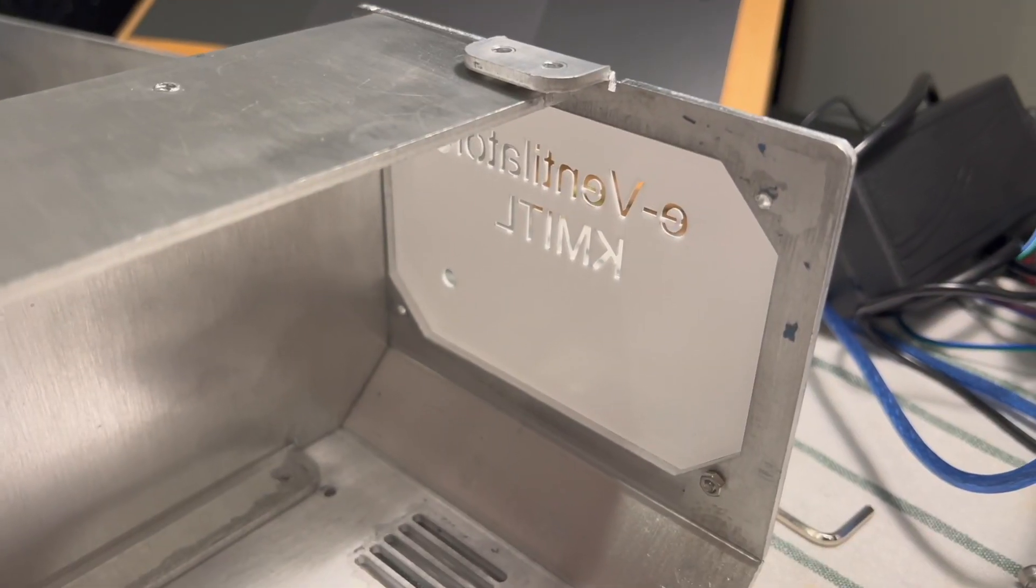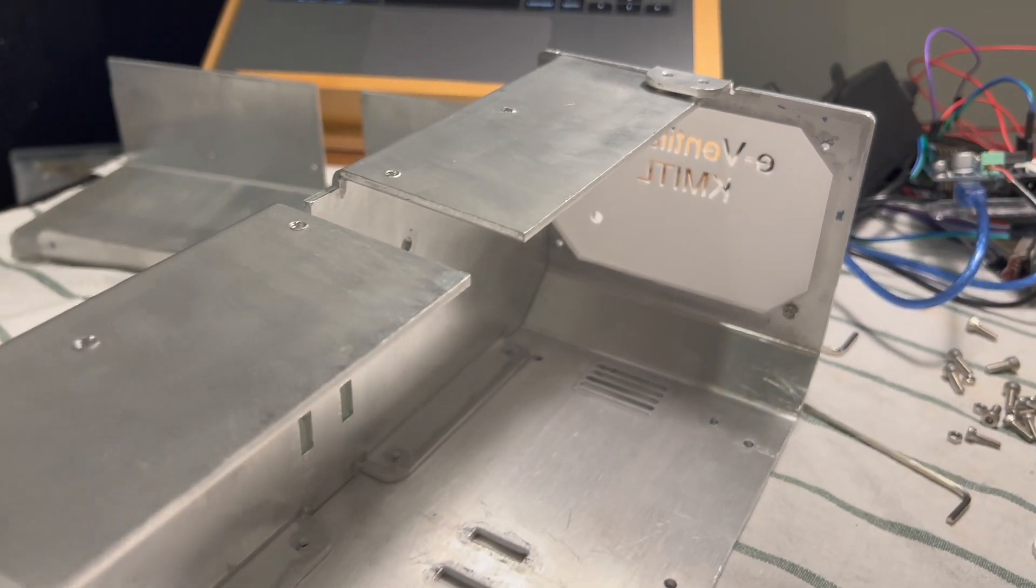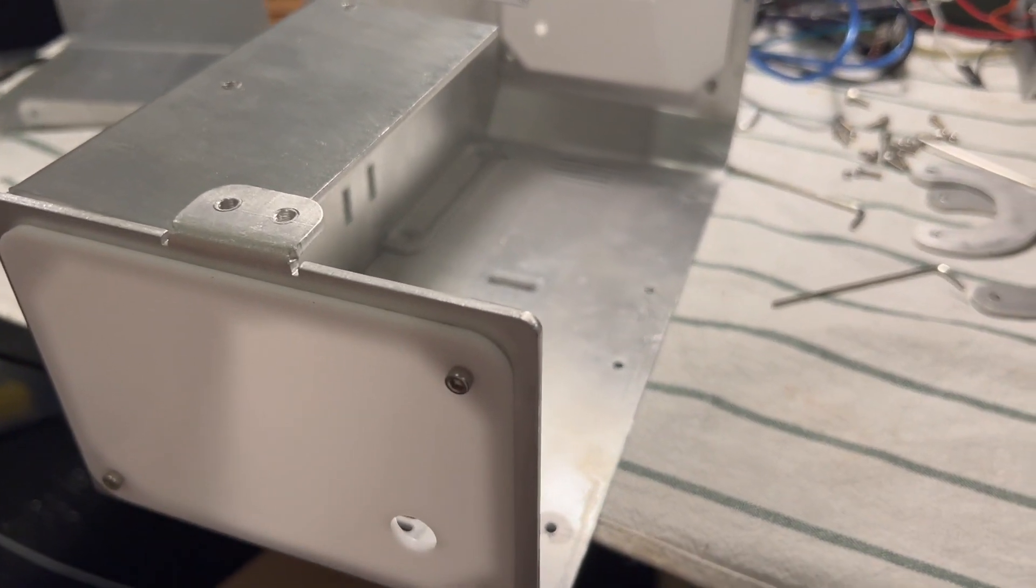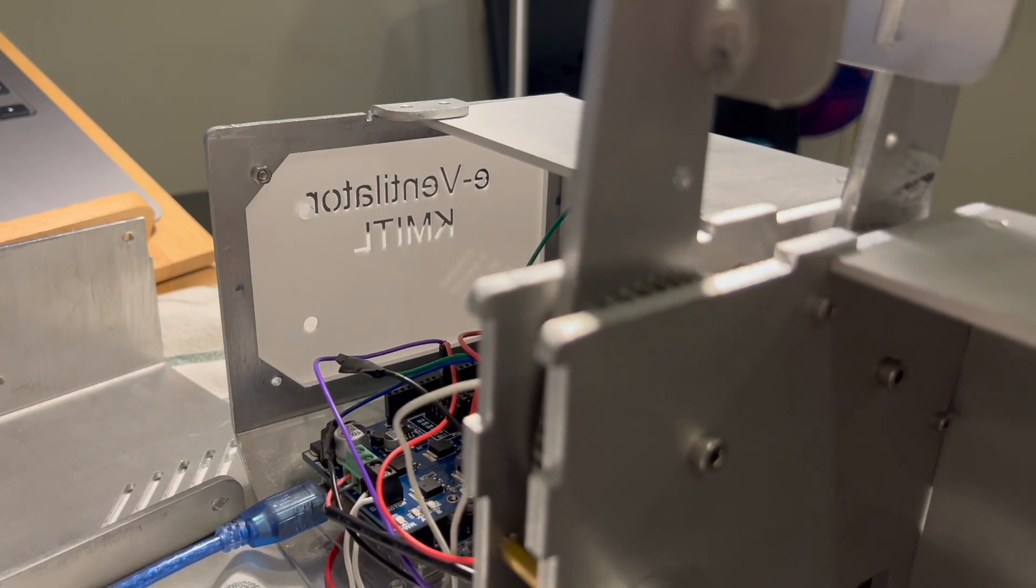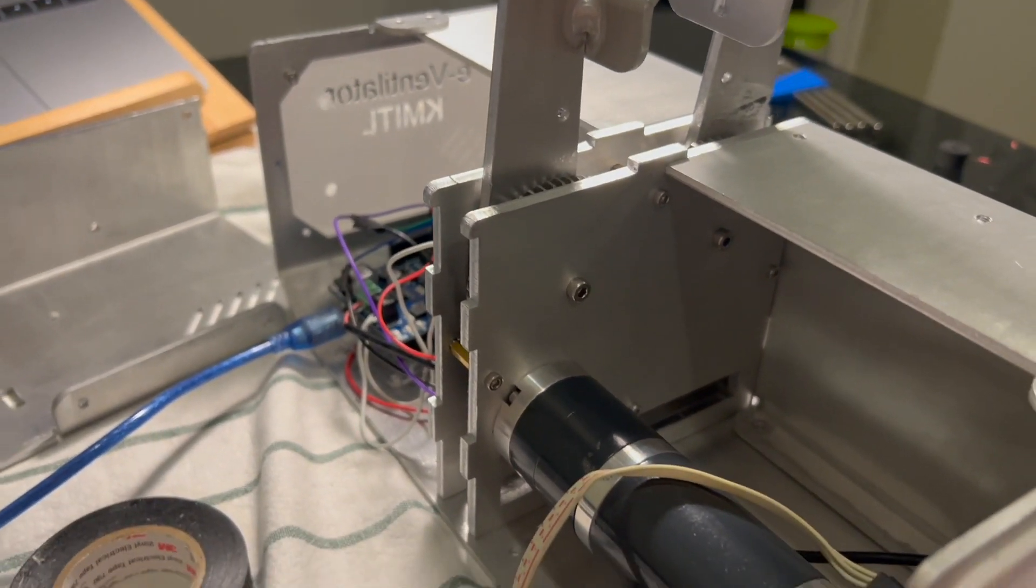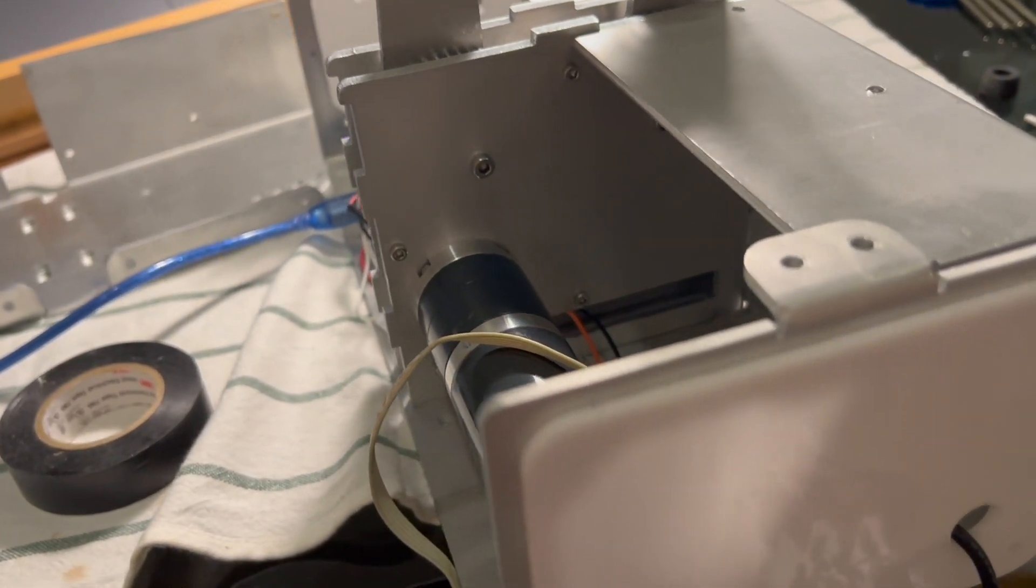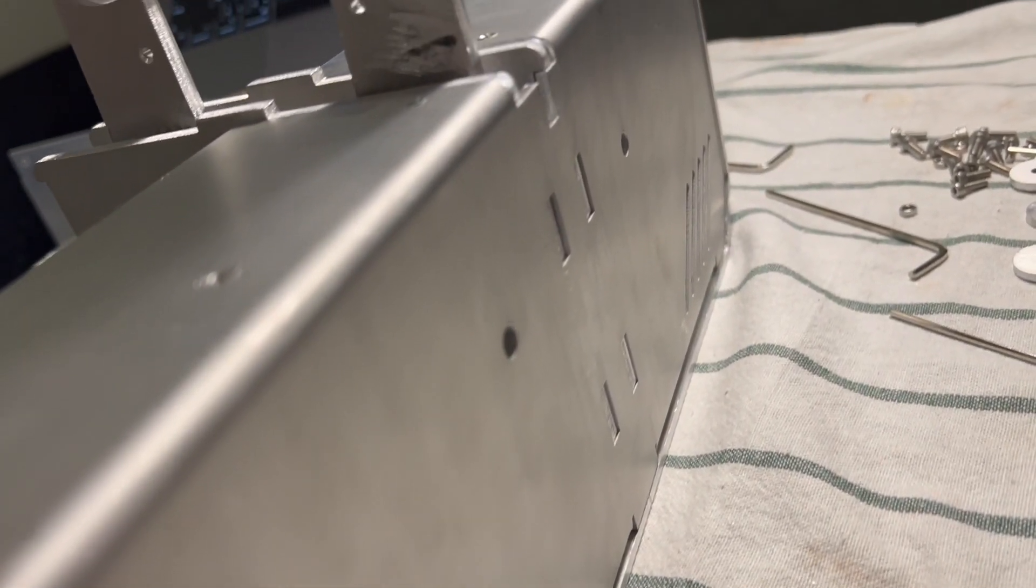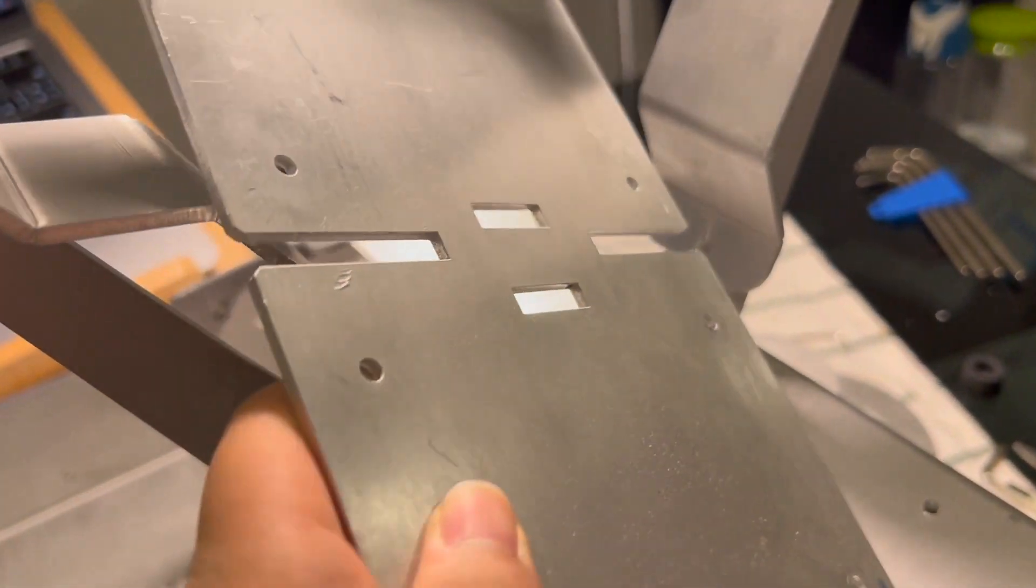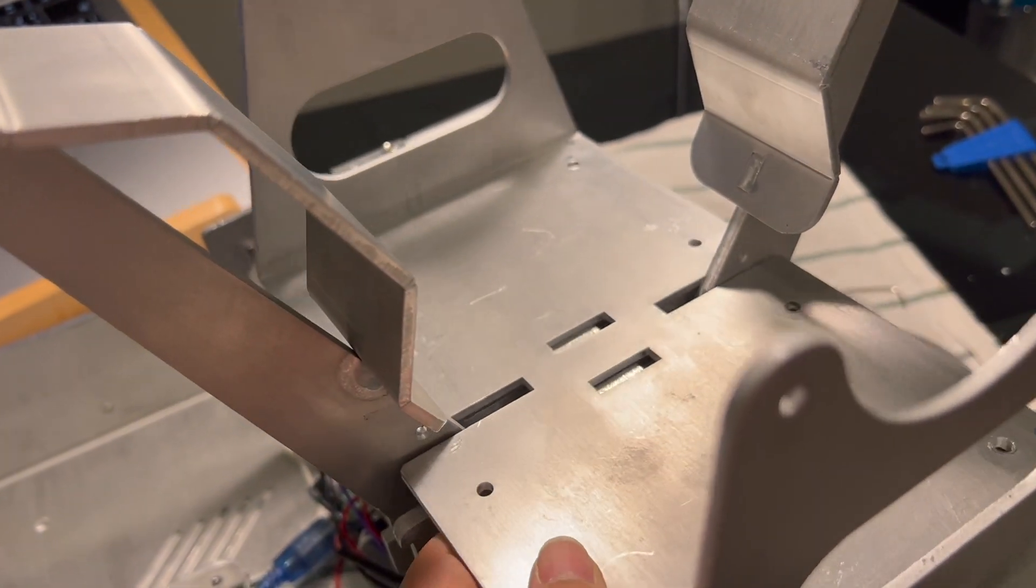Our emergency ventilator consists of two modes. First is the continuous mandatory ventilation or the CMV mode. This is a type of mechanical ventilation in which breaths are given by the ventilator. The patient cannot breathe at all. The ventilator will run at the parameters which we set.